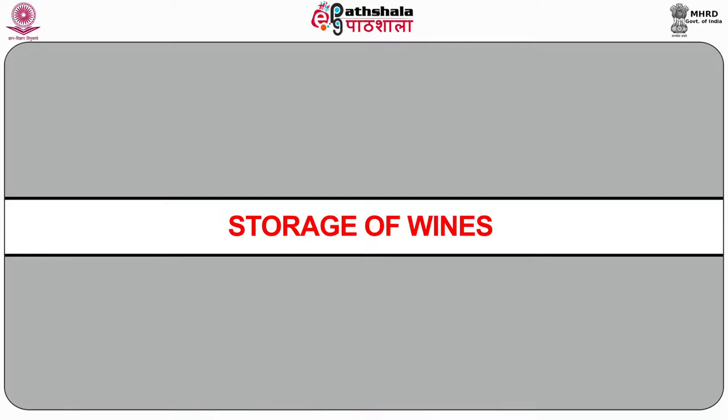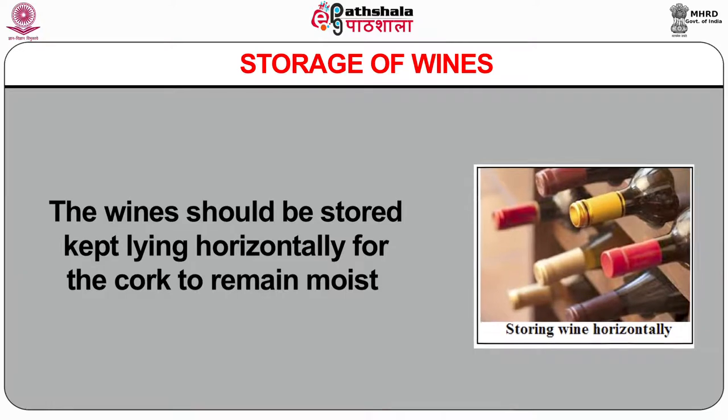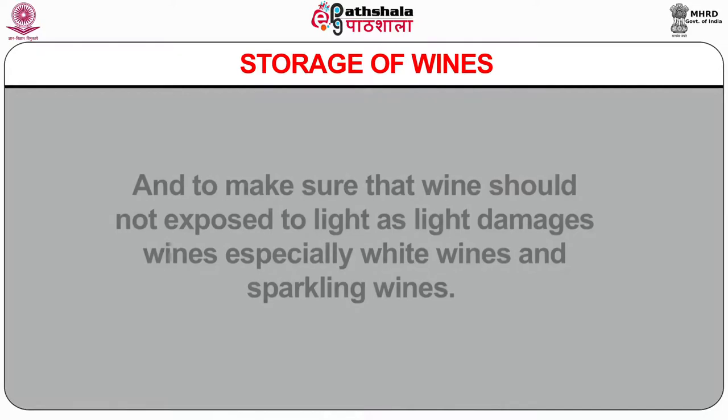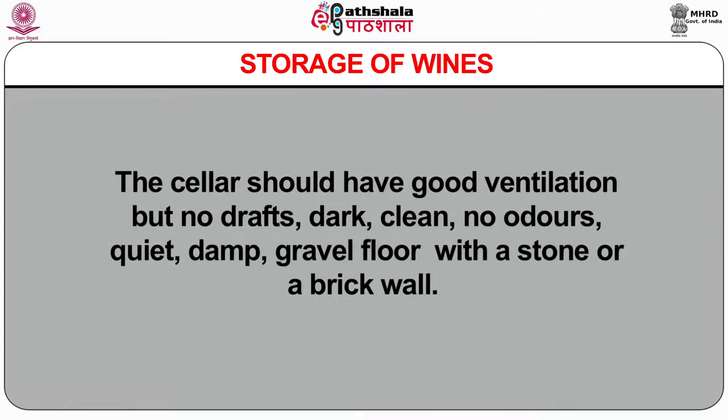Wines should be stored kept lying horizontally for the cork to remain moist, and should not be exposed to light as light damages wines, especially white wines and sparkling wines. An ideal place to store wine is a cellar, situated underground to avoid any vibrations. The cellar should have good ventilation but no drafts, and should be dark, clean, with no odor, quiet, damp, with a gravel floor and stone or brick walls. The temperature of the cellar should be cool and constant between 8°C to 18°C, and humidity should be 75% to 80%. Wine in the glass is poured as: red — one third full, white — one half, and sparkling wine — three quarters.